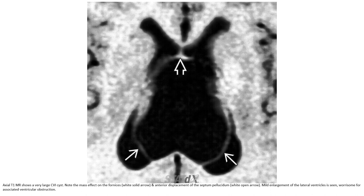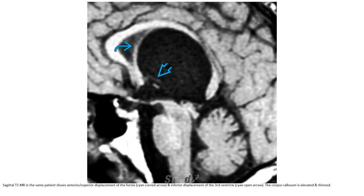This is a T1 showing very large CVIs with associated ventriculomegaly obstruction. Note the mass effect on the fornix and anterior displacement of the septum with ventriculomegaly. Mildly enlarged lateral ventricles are seen in the same patient, showing what is called associated ventricular obstruction. The coronal T1 of the same patient shows the fornix anteriorly and superiorly displaced, with inferior displacement of the subventricular zone. The corpus callosum is elevated.